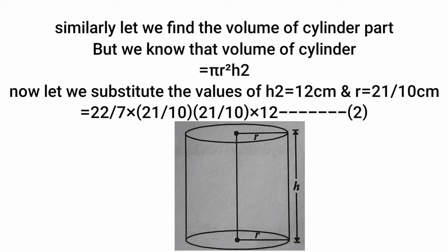Similarly, let us find the volume of the cylinder part. We know that volume of cylinder equals π r² h2. Let us substitute the values: h2 equals 12 cm and r equals 21/10 cm. That equals 22/7 × (21/10) × (21/10) × 12. Take it as equation 2.